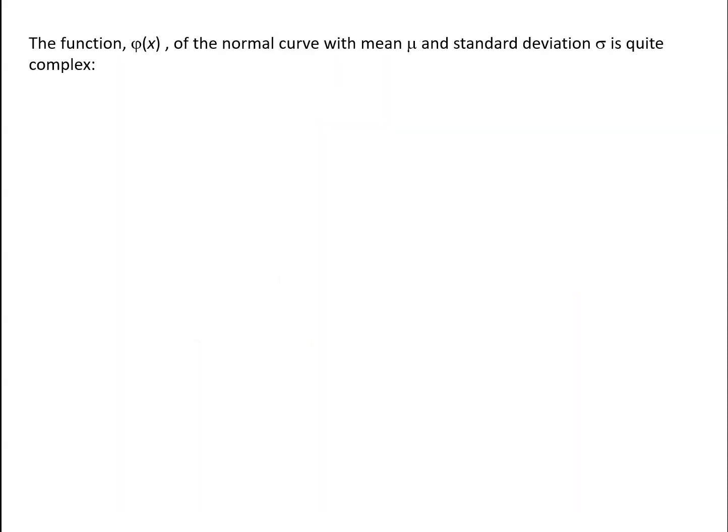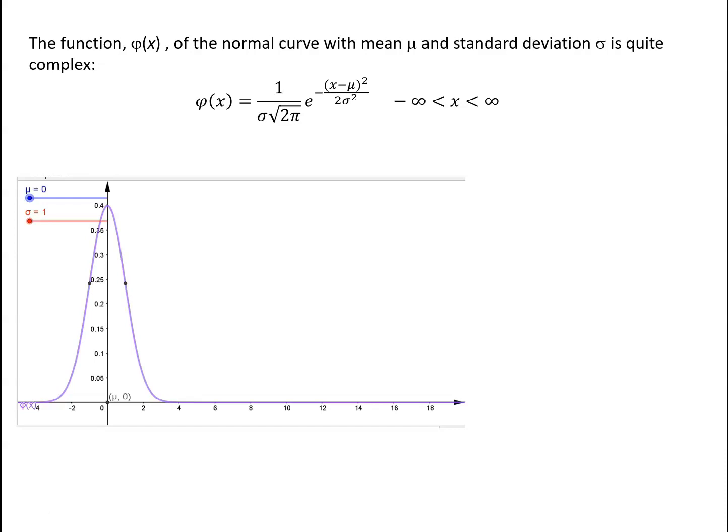Now, unfortunately, the function of the probability density function for the normal curve with mean μ and standard deviation σ is quite complex. There's its formula. You don't need to learn that formula. You'll very rarely need to use it. What we are going to do is we'll have a look at how the value of μ and the value of σ affect the shape of the graph that we get.